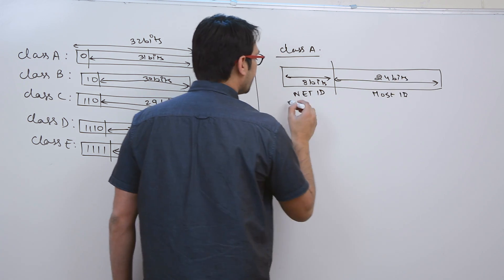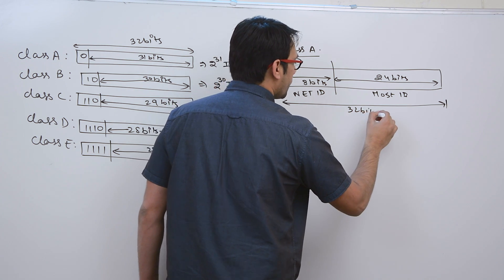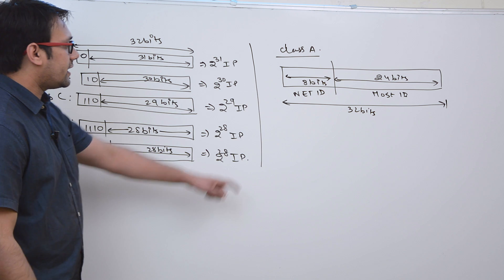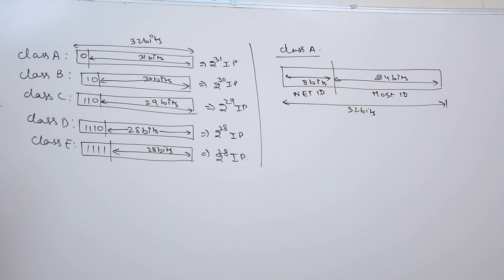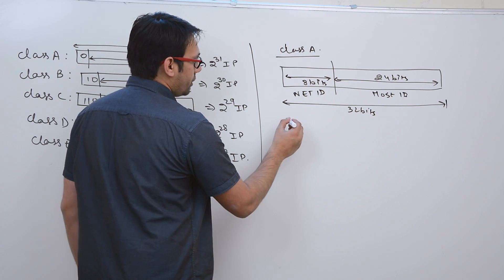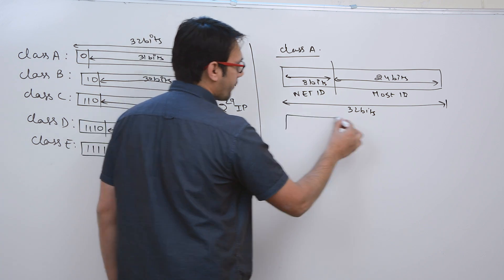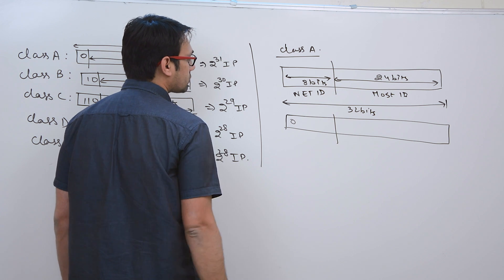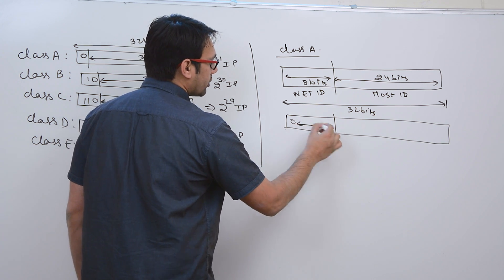In total we have 32 bits. In all these 8 bits of the first octet, the first bit is fixed as 0, and the remaining 7 bits can take any combination.